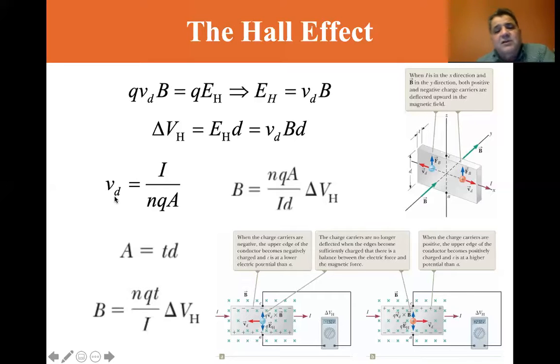The drift velocity is also I divided by nqA. So if we substitute this for the v_d and do a little manipulation, we're taking the v_d and inverting it.